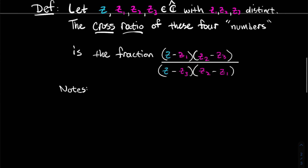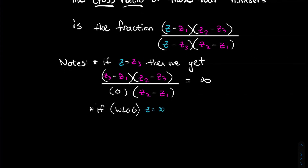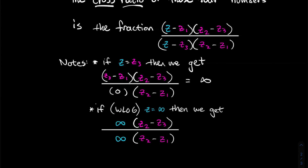Some notes about this cross ratio: first, what if z equals z3? Well, the denominator becomes zero, but in the extended complex plane that's okay — dividing a nonzero complex number by zero gives infinity. Also, what if someone is infinity — say z is infinity? Then we get infinity over infinity, but treating it like an asymptote, the infinities cancel and it reduces to (z2 − z3)/(z2 − z1).